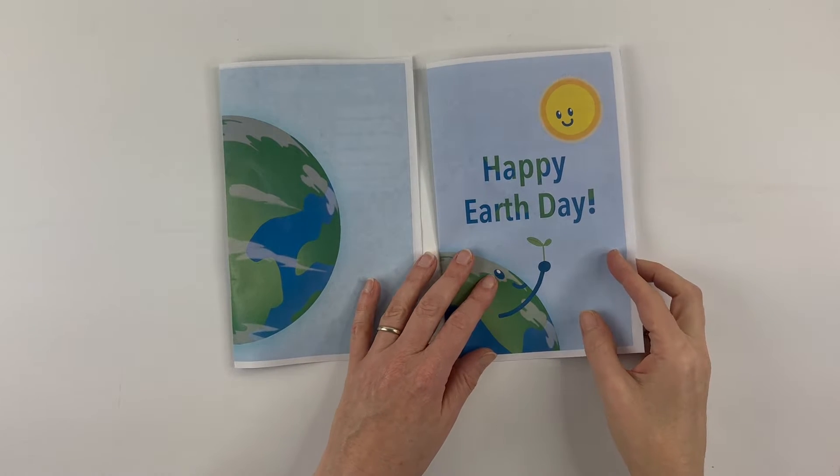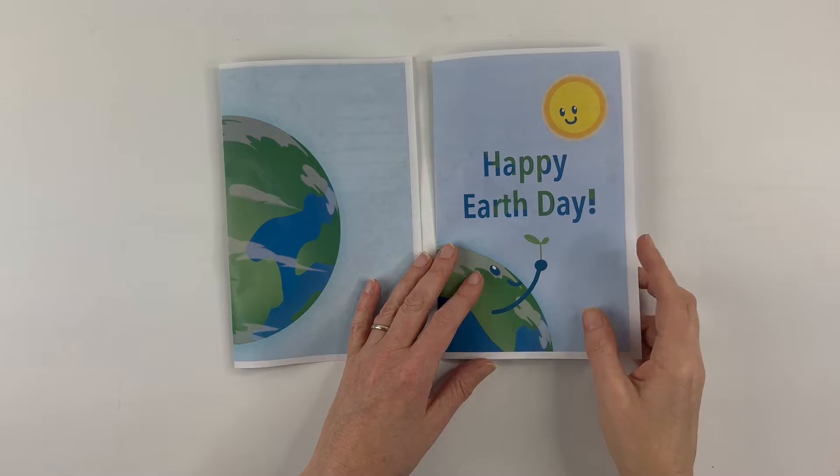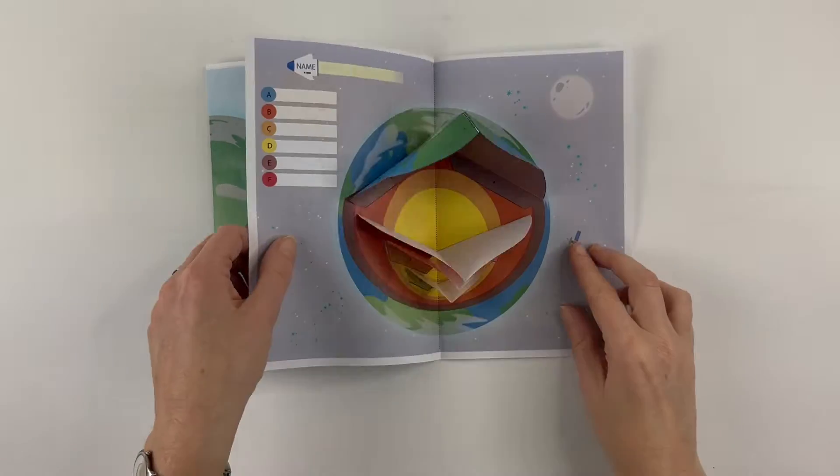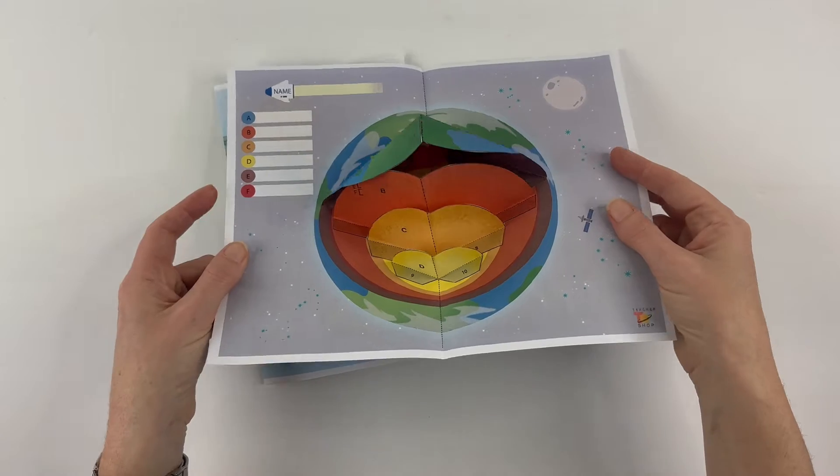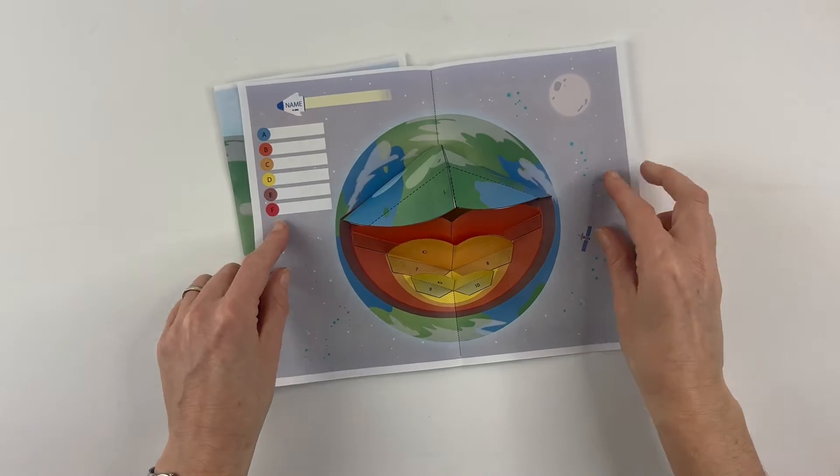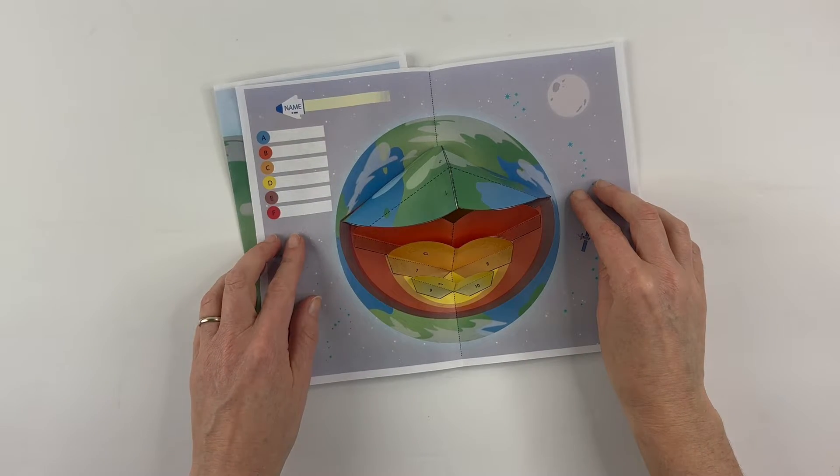So the finished product will look something like this. You may have a variation, but for example when I open this you get a pop-up earth showing the various layers and you can label the parts here.